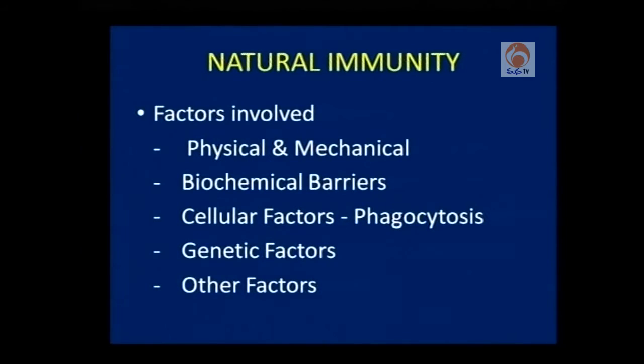Acquired immunity is different among members of a species — it is not uniform. Here immune memory is generated, and this is basically mediated by lymphocytes and antibodies. In natural immunity, four or five different factors can be identified: physical and mechanical barriers, biochemical barriers, cellular factors involving phagocytosis, genetic factors, and certain other factors like temperature and fever.